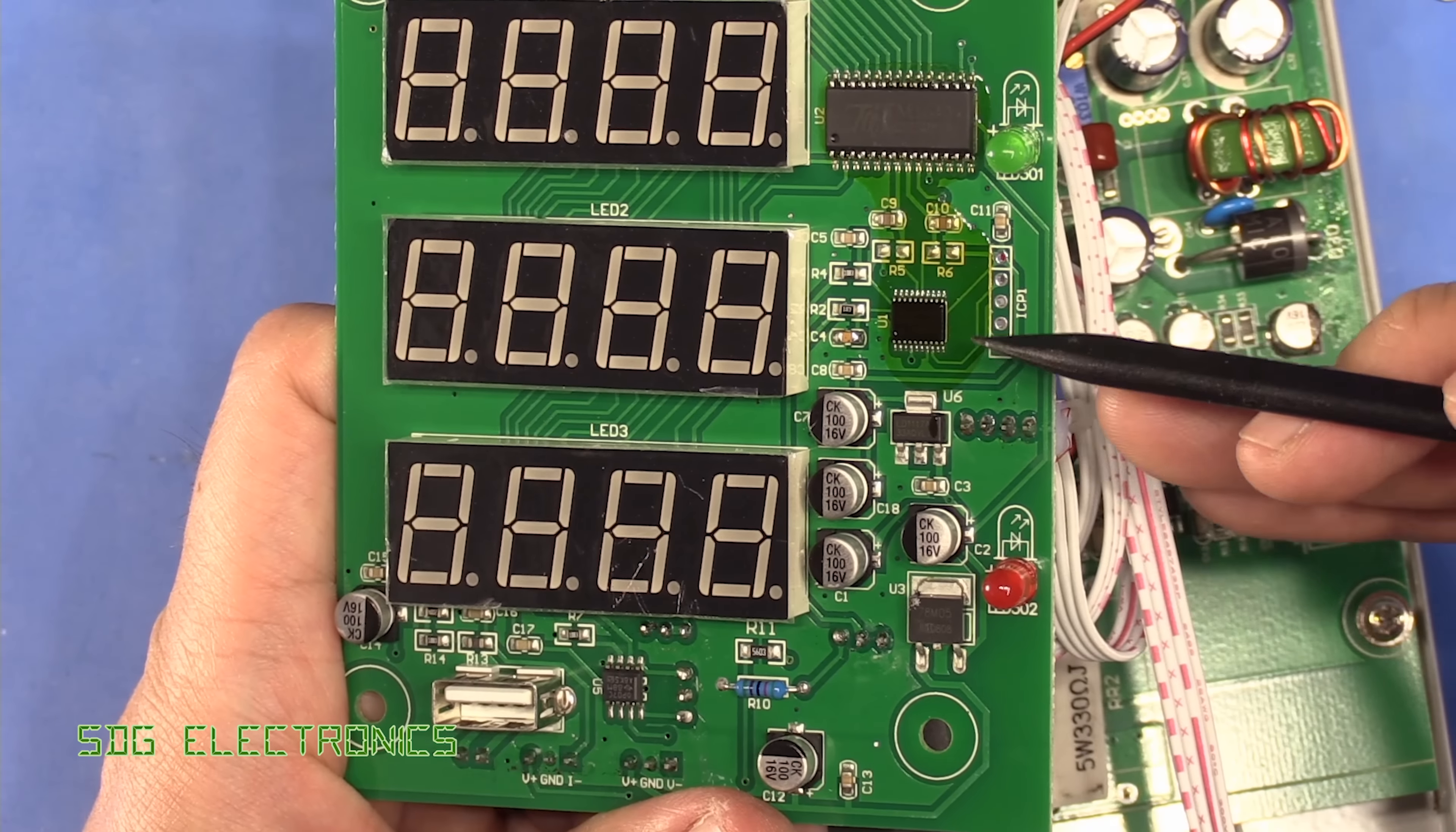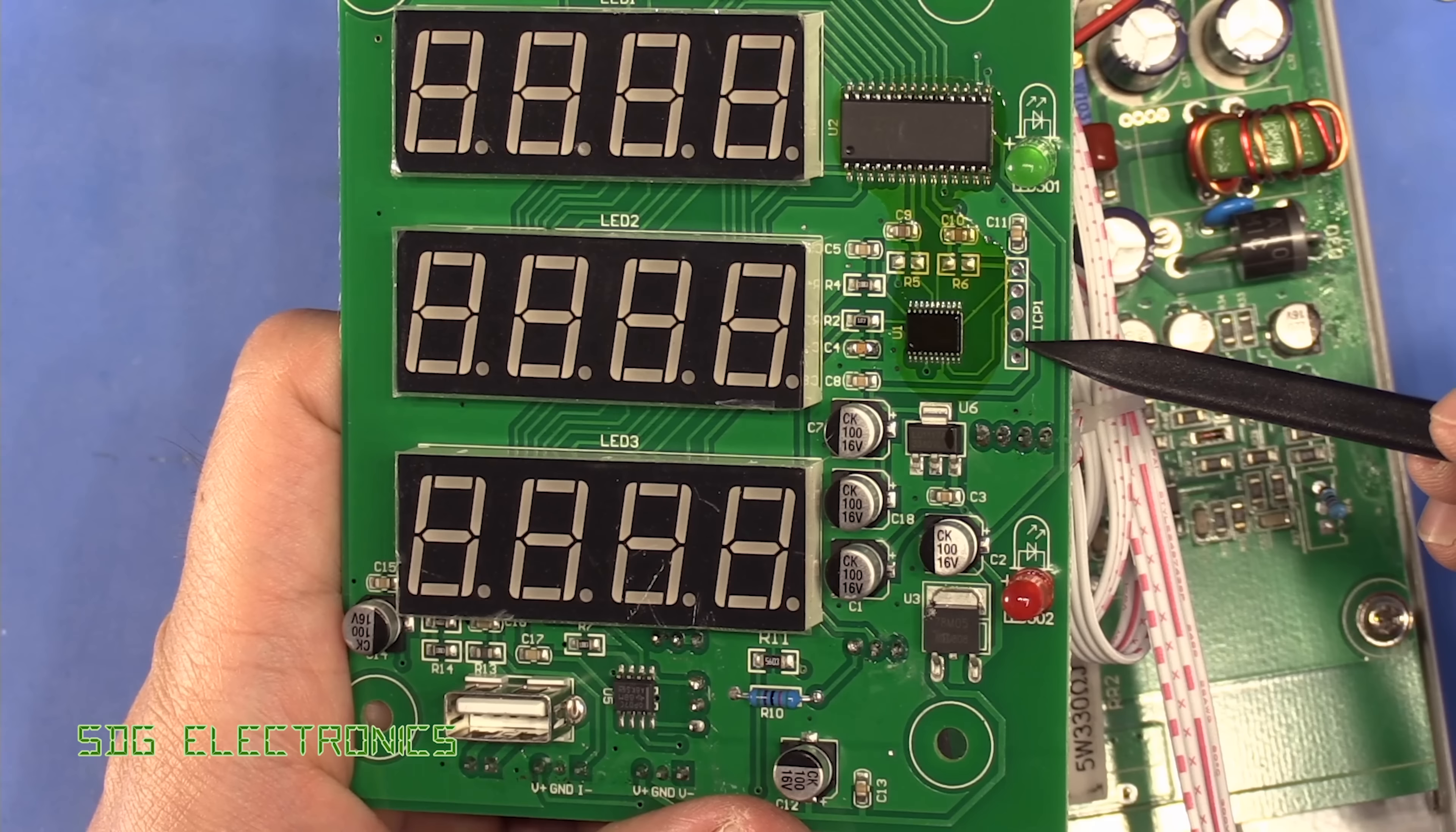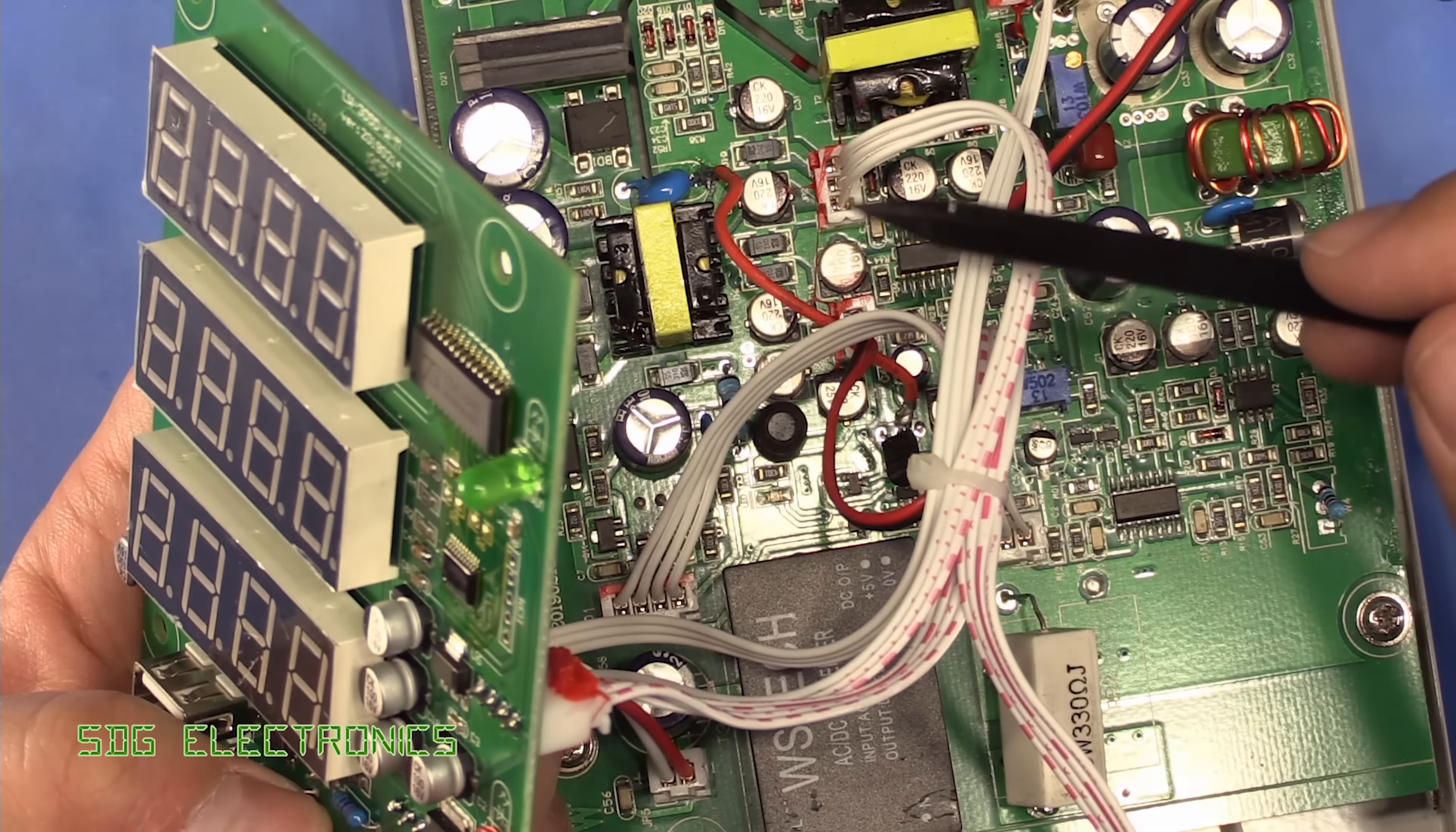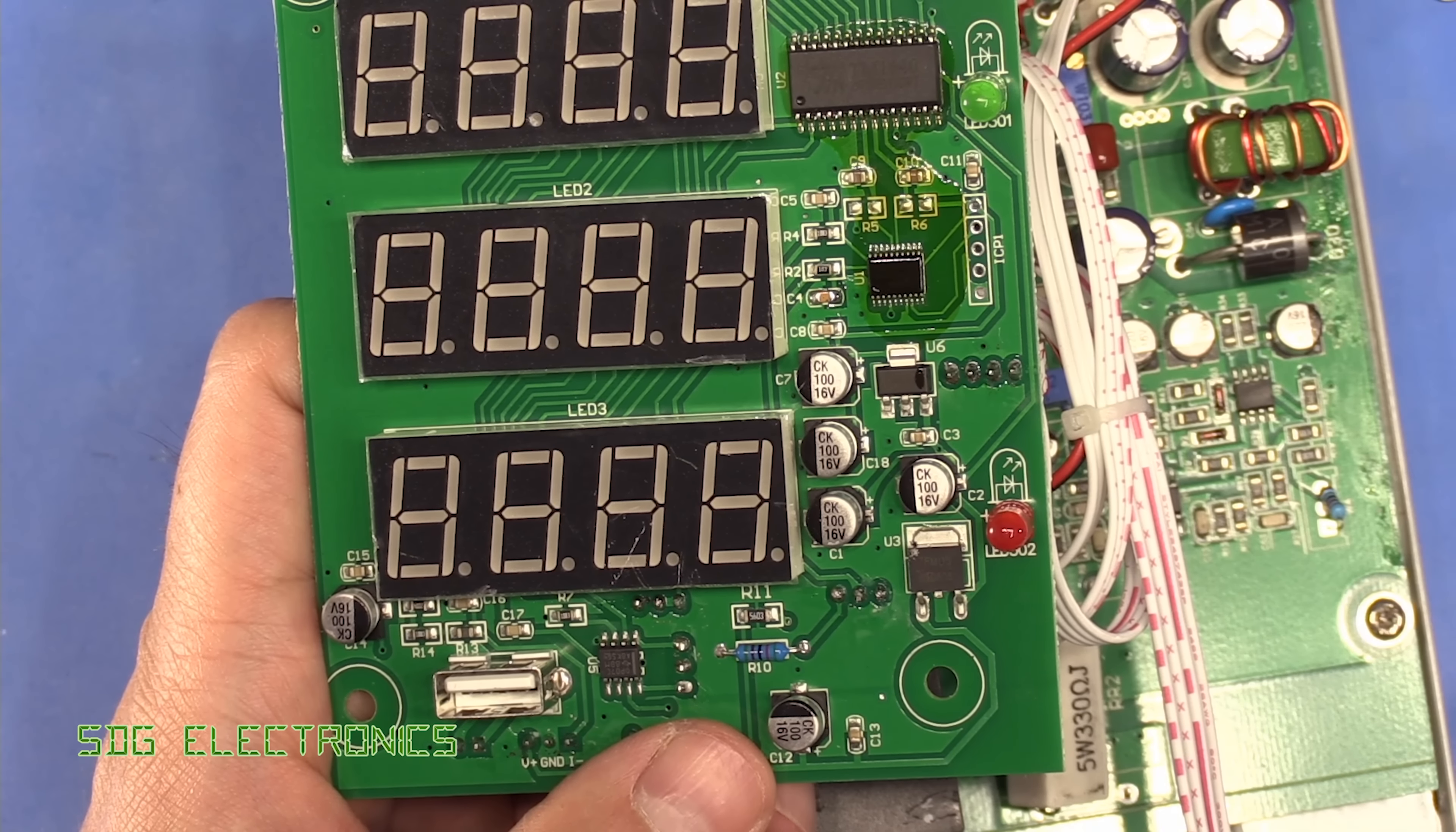That's driven by this microcontroller here, a Nuvoton. They're low cost 8-bit microcontrollers with our programming pins here. Regulators for the various supplies. And what this is doing is taking the voltages that it's reading on the PCB and doing the conversion into volts, amps and also calculating the power that's being drawn.